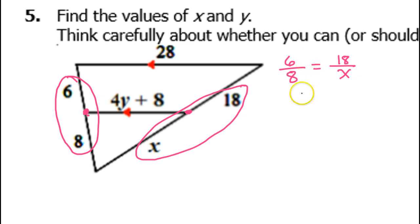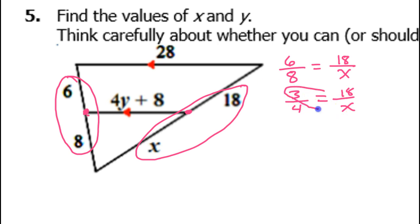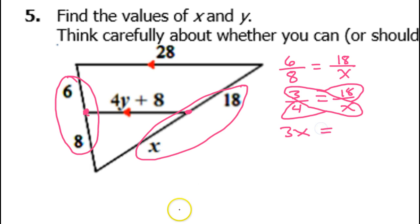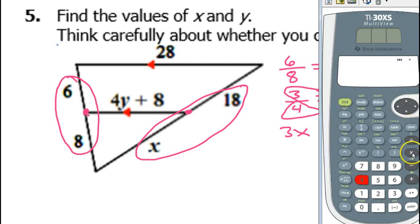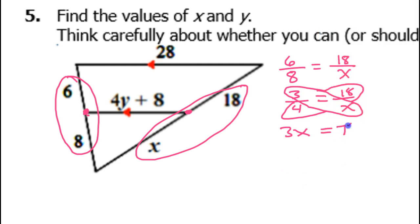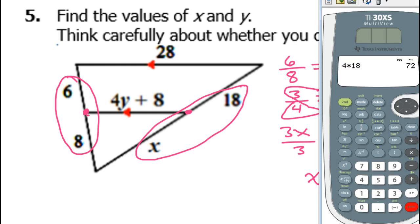6 over 8 reduces down to 3 over 4, and that's going to equal 18 over x. Then it's time to cross-multiply. That diagonal gives me 3x, and the other diagonal gives me 4 times 18, which is 72. Dividing both sides by 3, that's 24.